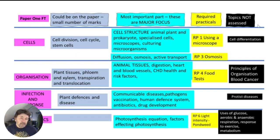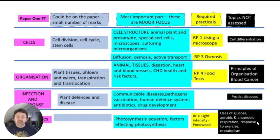What's really important to state is the topics that were not assessed last year. For Paper 1, they didn't do anything on stem cells, blood, cancer, protist diseases, or anything to do with respiration — the whole section of respiration was not covered.